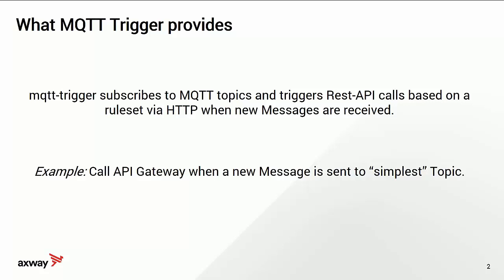Every time a new message is received, an HTTP call is made and a system — like an API gateway in our case — can use and process that message further: integrating it into a JMS system, forwarding it to a backend, inserting it into a database, and so on.